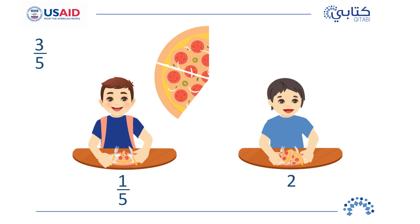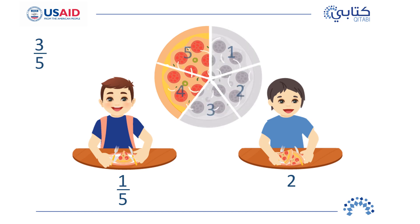So first the pizza was cut into five equal pieces. My brother ate two-fifths and I ate one-fifth. What fraction of the whole pizza was left? Look at the pizza — how many pieces were left? Two pieces! So what do you conclude? When one-fifth is taken away from three-fifths, we get two-fifths. To subtract one-fifth from three-fifths, we get two-fifths.